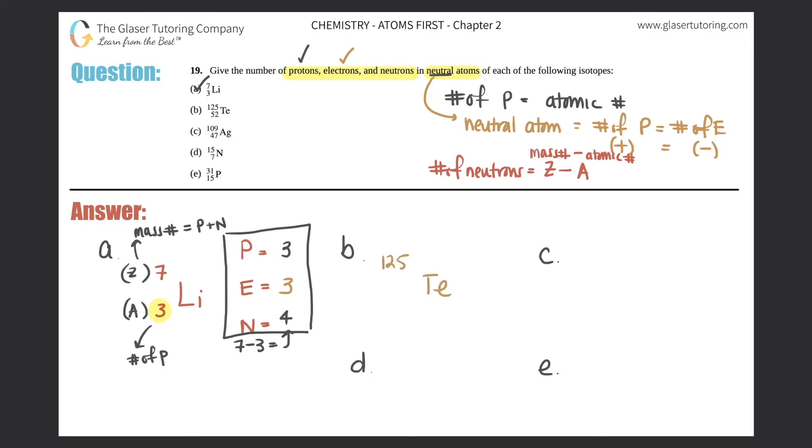TE, tellurium, 125 and 52, P E N. Protons is down below, 52. So 52 protons. Since it's neutral, the electrons should equal 52 as well. That's always the case. And your neutrons would be just the subtraction of 125 minus 52. So 125 minus 52 is 73. So that is how many protons, neutrons, and electrons are in letter B. Check that off.